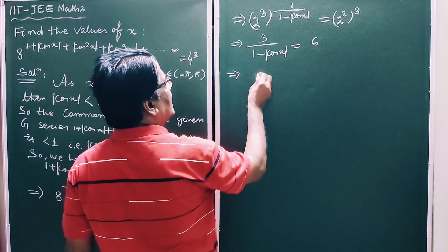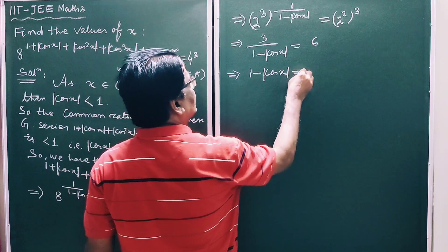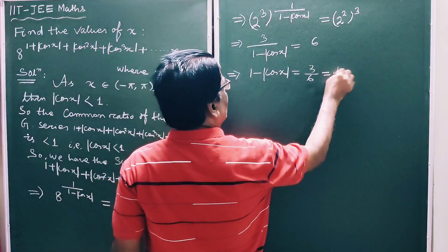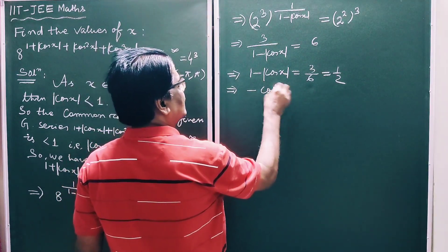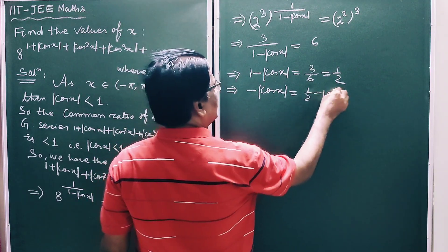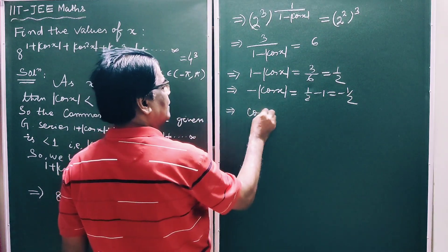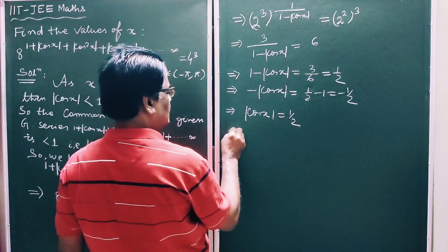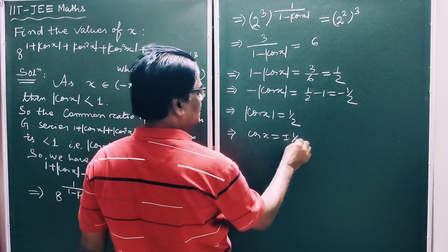This implies 1 minus |cos x| is equal to 3 by 6, which is 1 by 2. This implies minus |cos x| is equal to 1/2 minus 1, giving |cos x| is equal to 1/2.